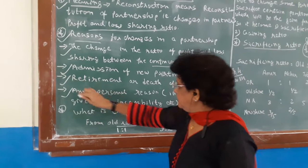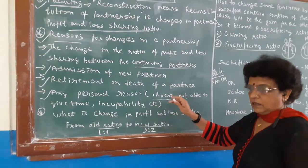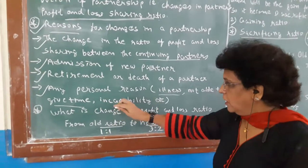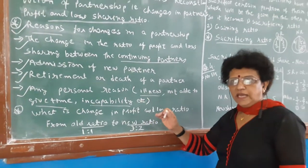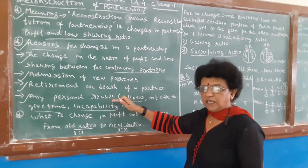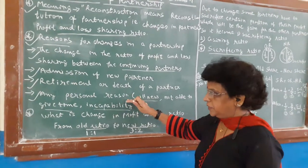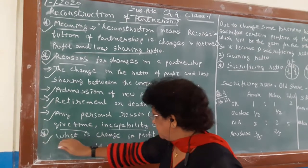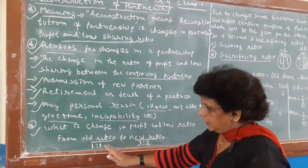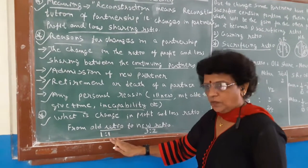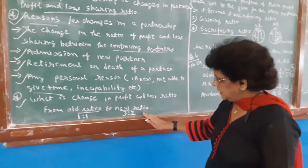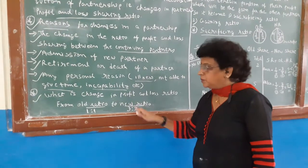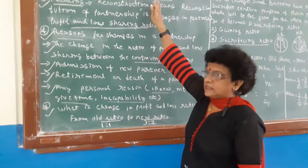When a partner is going, his share now has to be adjusted by the remaining partners, so there will be a change. Any other personal reason — a person may be sick, become ill, not able to keep time, or may be moving abroad due to personal reasons or incapability, personal efficiency going down. So he says please let me leave from my partnership and duties. These are the various reasons because of which changes are required. For example, if the old ratio is 1:1 and the partners decide to change it to 3:2, that situation is called reconstruction.